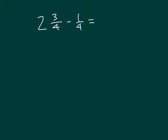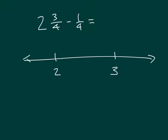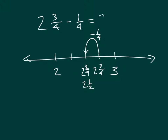Here we have 2 and 3/4ths minus 1/4th. Let's use a number line to see what this would look like. We have 2 and 3 marked on our number line, and we can mark 2 and 3/4ths there. Subtracting 1/4th, we are now at 2 and 2/4ths, which we know also equals 2 and 1/2.